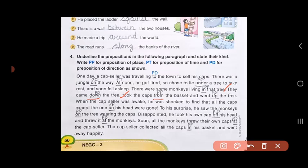Disappointed, he took his own cap off his head. 'Off' means removing the cap, taking it away from his head, so it's telling you the direction. So off is preposition of direction. And threw it at the monkeys. 'At' means towards the monkeys, so at becomes PD, preposition of direction. Soon, all the monkeys threw their own caps at the cap seller. 'At' again becomes preposition of direction, PD.